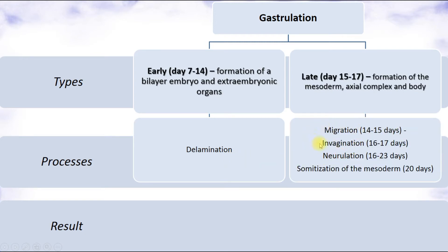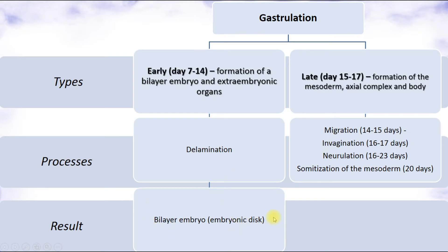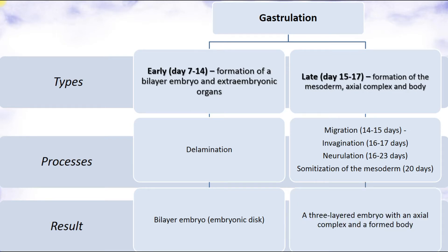Early gastrulation includes delamination, while late gastrulation includes migration, invagination, neurulation, and somatization of the mesoderm, which take part in the formation of axial organs. The result of early gastrulation is a bilayer embryonic disc with ectoderm and endoderm. The result of late gastrulation is a three-layered embryo with ectoderm, endoderm, and mesoderm, plus the axial complex and formed body.